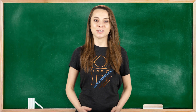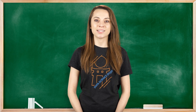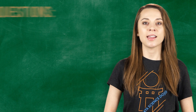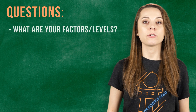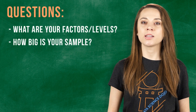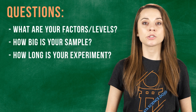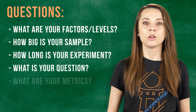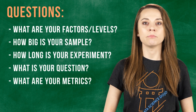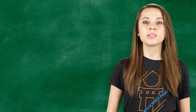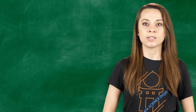So now you know the difference between an A-B test and a multivariate test. Before deciding what kind of experiment to run, ask yourself these questions: What are the factors or levels you plan on changing? How big is your sample size? How long will you conduct your experiment? What is the business question you want to answer? What are your metrics and expected outcome? And who is in your experiment? Answering these questions are the first step in experimentation for your A-B or multivariate test.